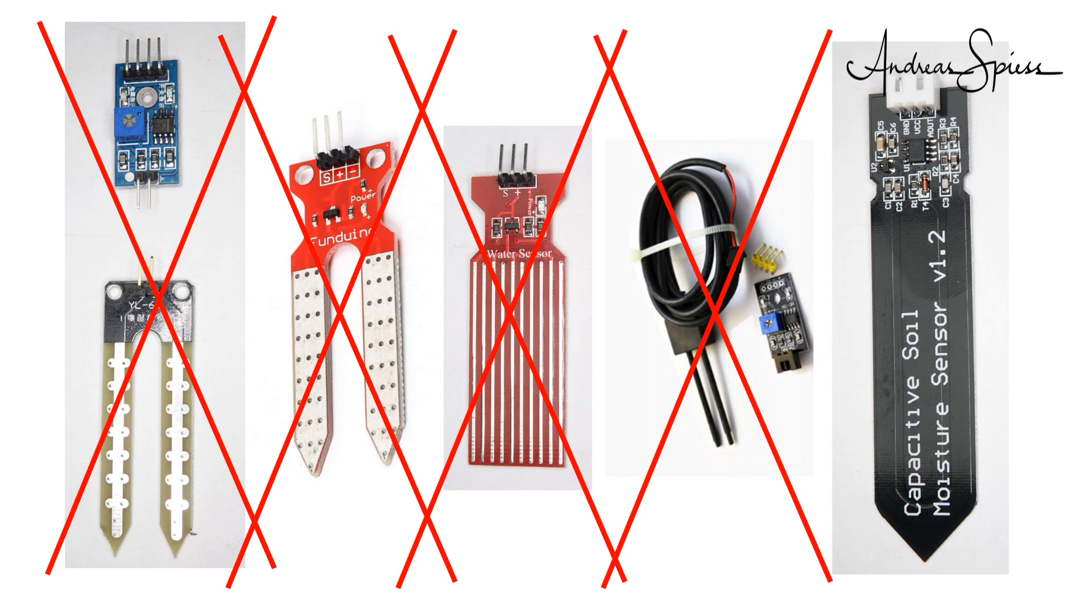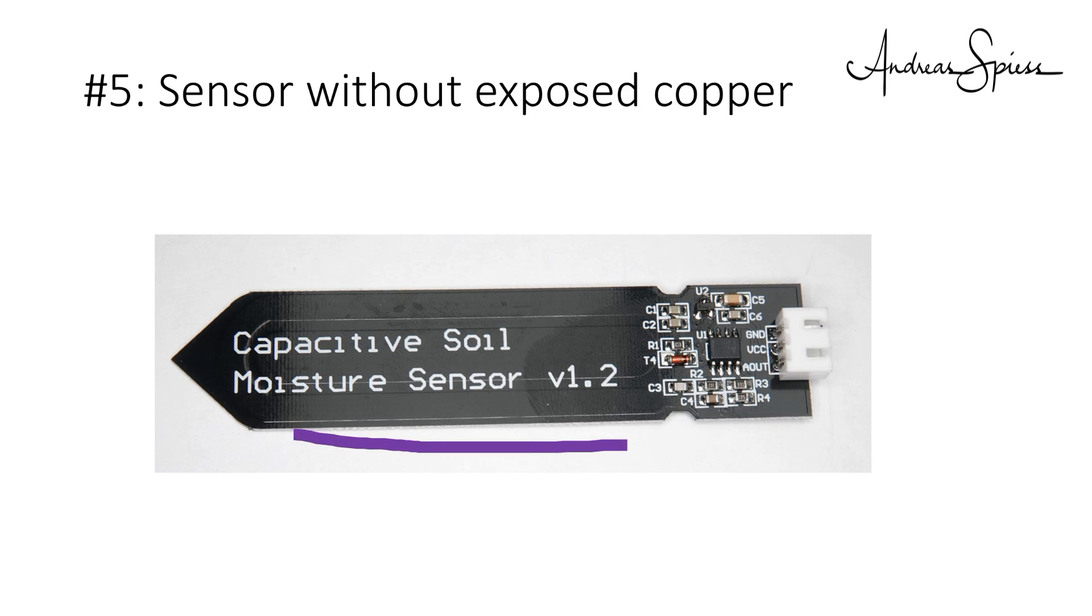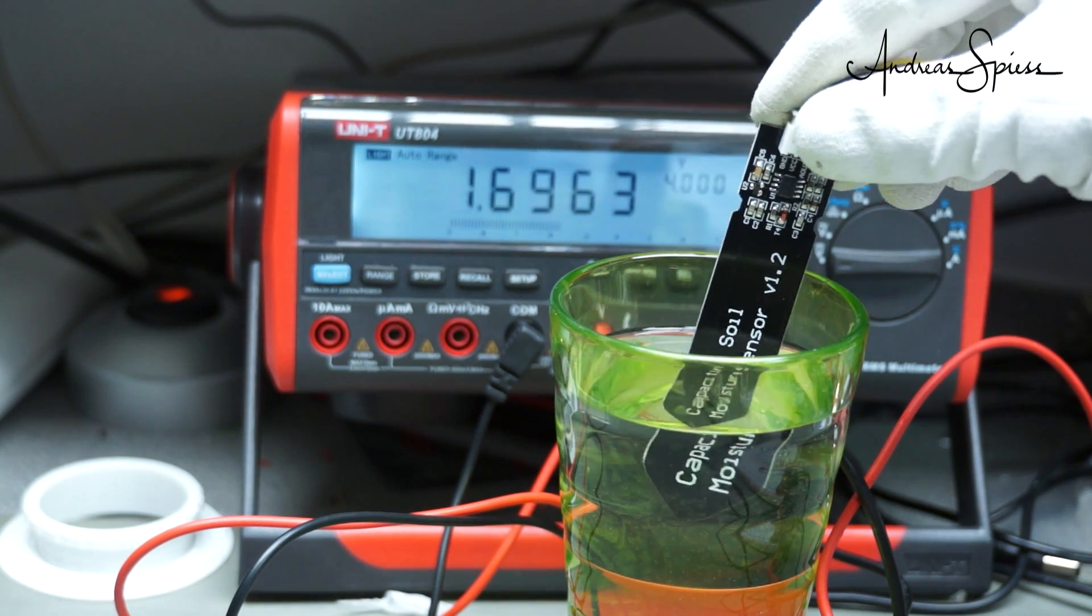Let's continue with the last sensor. This one has no copper exposed to water and its legs cannot be dissolved. Good. But how does it work? When we tried to isolate the sensor legs before, the sensor did not work at all. So, let's check if this one works. Yes, it does. Cool.